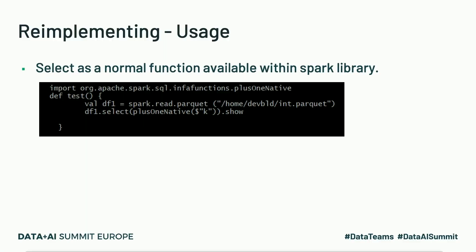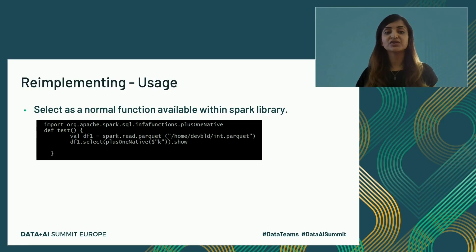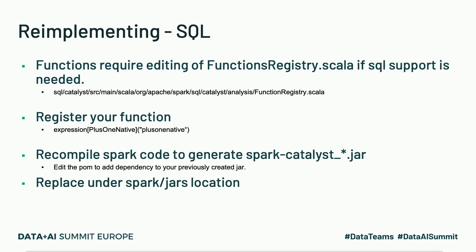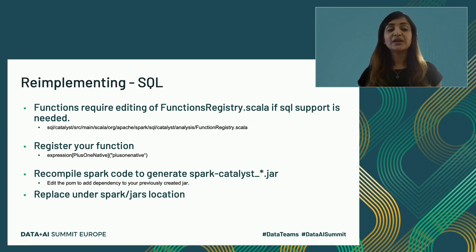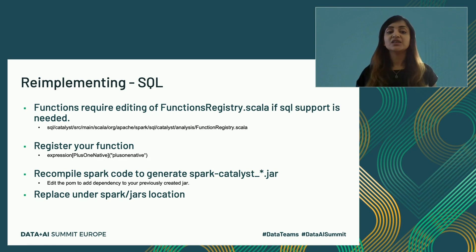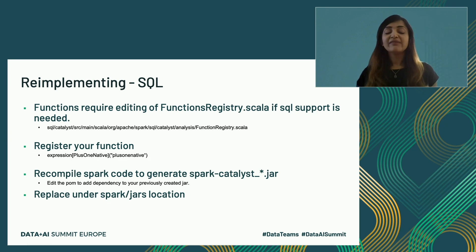Now having done that, I can go to my Spark shell or write Spark code. All I need to do is import this function. I imported info functions dot plus one native, and I was able to utilize this function as any other native Spark function. A caveat: a lot of us use SQL queries for Spark SQL. If I'm doing that, I need Spark's SQL parser to understand that this expression exists. That knowledge comes from the function registry dot Scala class, which exists under the SQL Catalyst project. If you have to use SQL queries, you will have to edit this file — this is only a small change you have to make into the Spark code.